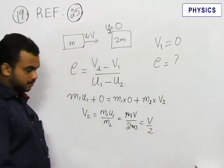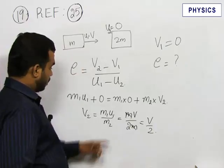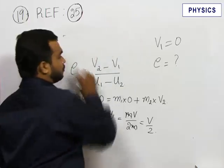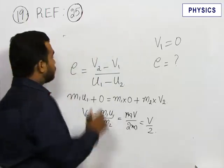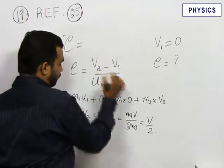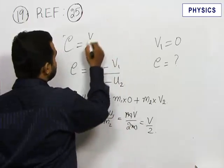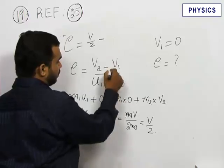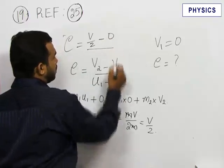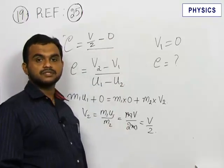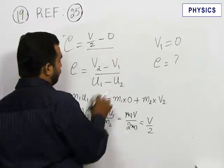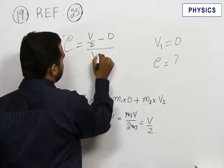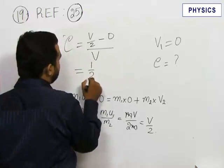After this we can substitute the value of v2 in this equation. So the coefficient of restitution is equal to v2, v2 is v by 2 minus v1, 0 because the final velocity of the first body is 0, by u1 minus u2, that is u1 equals v. So that is nothing but 1 by 2.